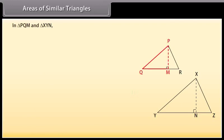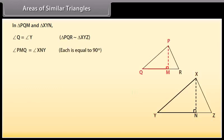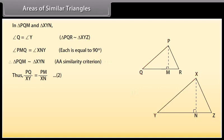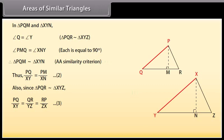In triangles PQM and XYN, angle Q equals angle Y since triangle PQR is similar to triangle XYZ. Angle PMQ equals angle XNY, each equal to 90 degrees. Therefore, triangle PQM is similar to triangle XYN by AA similarity criterion. Thus, PQ/XY equals PM/XN. Also, since triangle PQR is similar to triangle XYZ, PQ/XY equals QR/YZ equals RP/ZX. Mark it as equation 3.